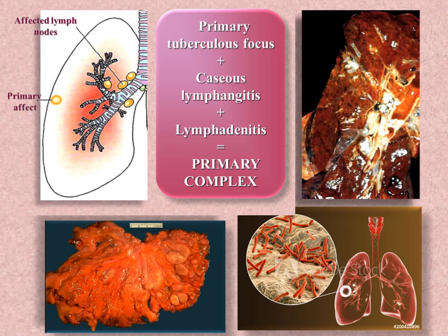In the gastrointestinal tract, as seen in the lower left corner of the slide, the primary affect is located in the lymphoid follicles of the ileum and cecum and is seen as ulceration on the intestinal wall. The process spreads to mesenteric lymph nodes, developing mesadenitis.